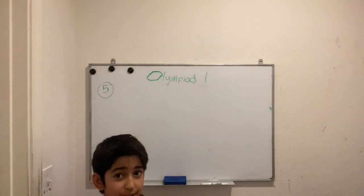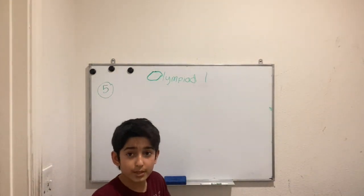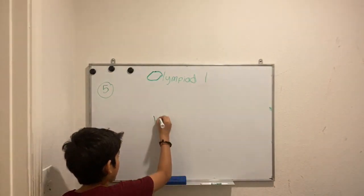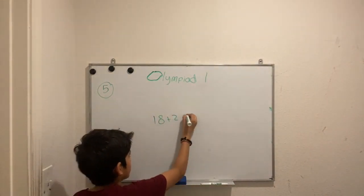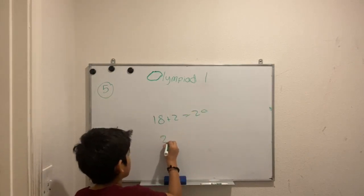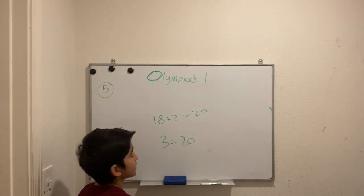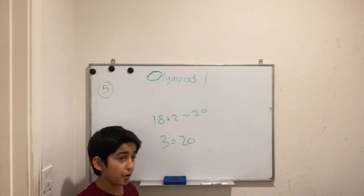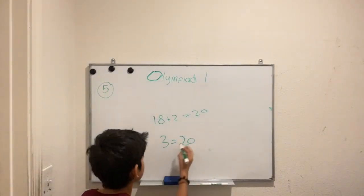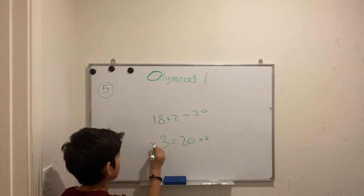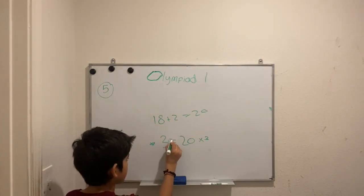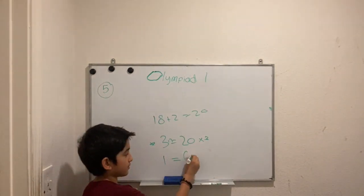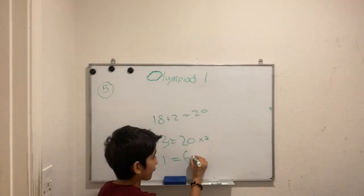First, let's figure out how many work days it takes for the crew of 3. Three weeks times 6 work days per week equals 18, plus 2 extra days equals 20 work days total. So 3 people take 20 days. For 1 person working at the same rate, multiply the days by 3: 1 person would take 60 days.